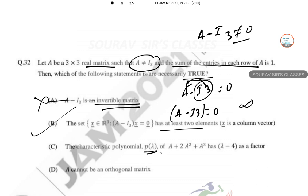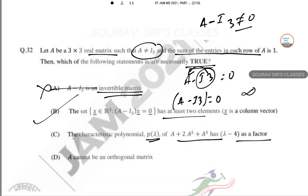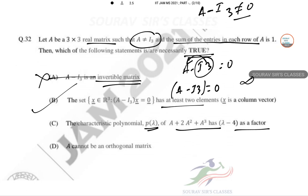The characteristic polynomial P(λ) of A plus 2A² plus A³ has λ minus 4 as a factor. We can take a value and try to accentuate a structure. Remember that for this, λ minus 4 for this characteristic equation can be a factor. So C can be right.